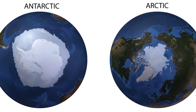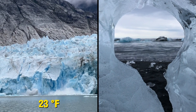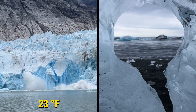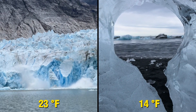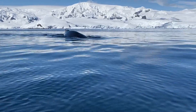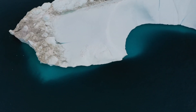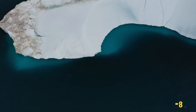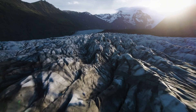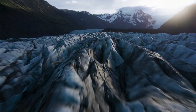Number five: temperature. Due to the global current cycle, warm water flows into the Arctic Ocean, making the north pole warmer than the south pole. The average annual temperature in the Arctic is 23°F, while in the coastal areas of Antarctica it is 14°F. However, in the center of the Antarctic continent the average annual temperature is minus 40°F. The lowest temperature ever recorded in the Arctic was minus 87°F, while in Antarctica it was minus 135°F, making it the coldest place on earth.